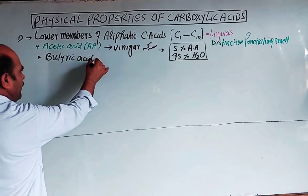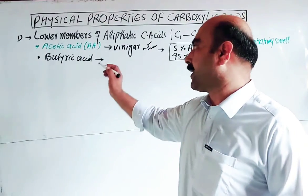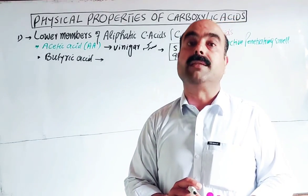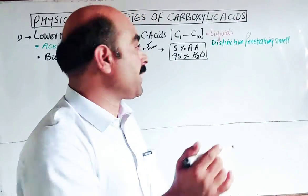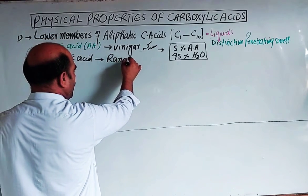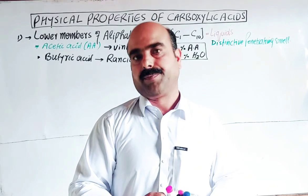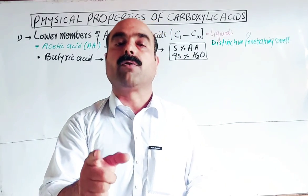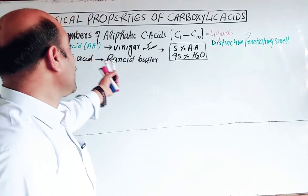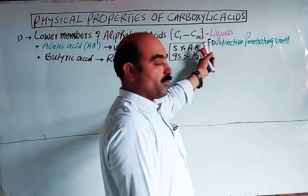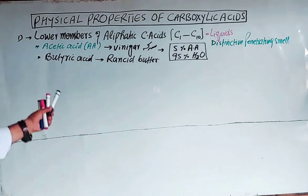Another example: butyric acid. The name 'butyric' relates to butter. Butyric acid gives the smell of rancid butter — that is, spoiled butter. The spoilage of fats and oils by microorganisms is called rancidity. So lower carboxylic acids have a distinctive penetrating smell — like the smell of vinegar for acetic acid, and the smell of rancid butter for butyric acid.